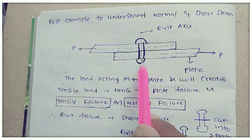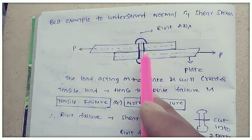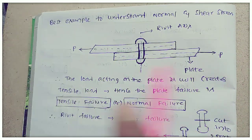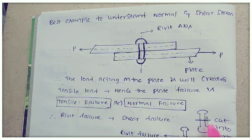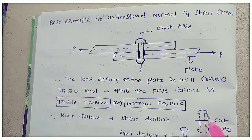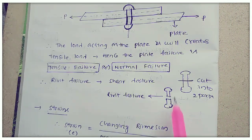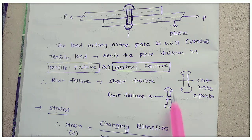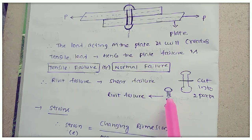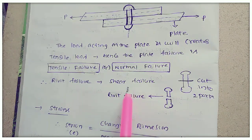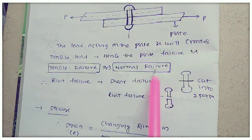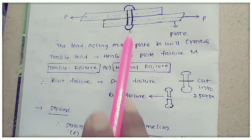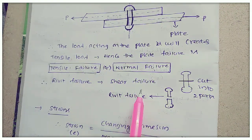When load is applied on the riveted member, the rivet will undergo shear — the rivet failure is a shear failure.